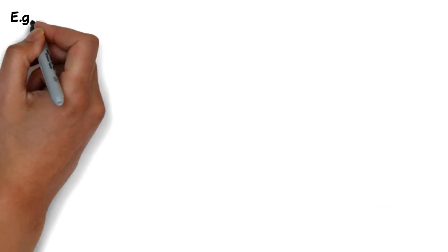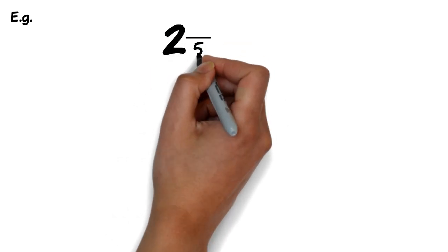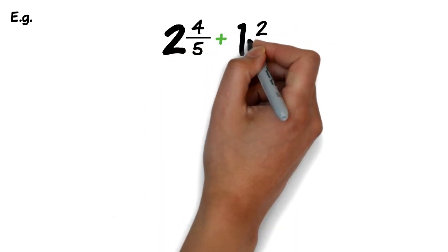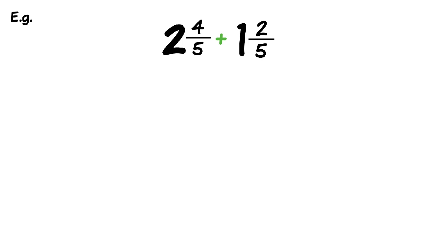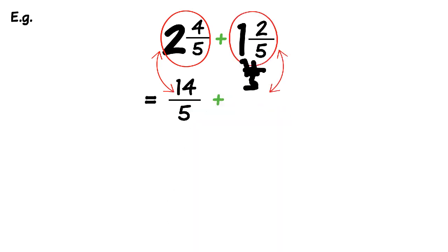What if we have mixed numbers this time? So what if we had 2 and 4 fifths plus 1 and 2 fifths. So as we did in part 1, whenever we have mixed number fractions, it's always easier to convert these into improper fractions and then work with them. So 2 and 4 fifths converting into an improper fraction becomes 14 over 5. And 1 and 2 fifths becomes 7 over 5.